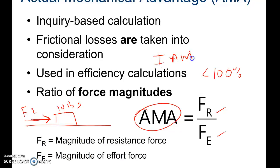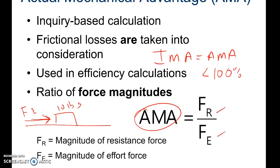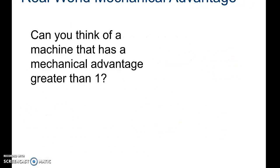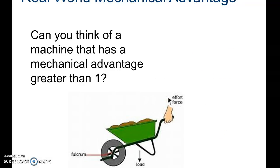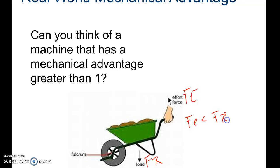If the IMA is equal to the AMA, then our actual system equals our ideal system and we do not have any frictional loss in our machine. This is just an example of a machine with a mechanical advantage greater than one — it represents a lever. When you use a wheelbarrow, the effort force you're applying is much less than the resistance force you're lifting, so FE is less than FR and you have mechanical advantage.